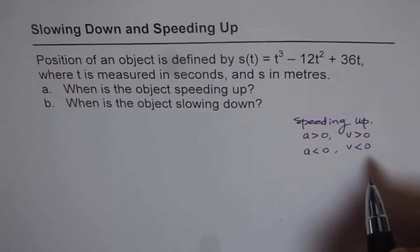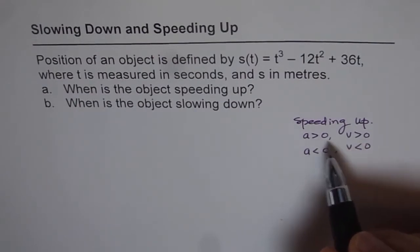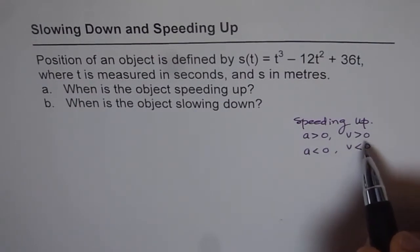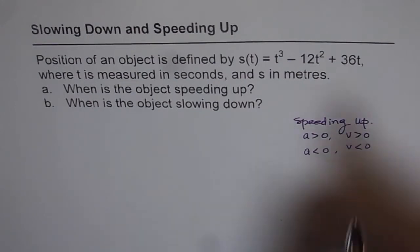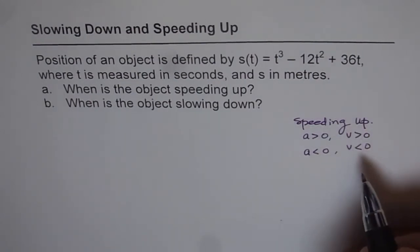Slowing down occurs when one is positive but the other is negative. For example, going north at higher and higher velocity means speeding up, but applying brakes while moving north means slowing down. That is how you should think about it.